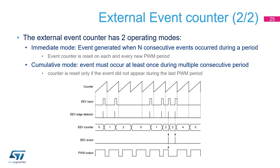The external event counter has two operating modes. In immediate mode, the event is generated as soon as N consecutive external events have occurred within a period, and the counter is reset at the end of the current PWM period — useful for valley skipping. In cumulative mode, the external event counter is not reset at the end of the period but only when there is no event during a period; the event is generated only if it has occurred during multiple consecutive periods. On the contrary, if there have been only two consecutive events without a third, the counter is reset after the third period.